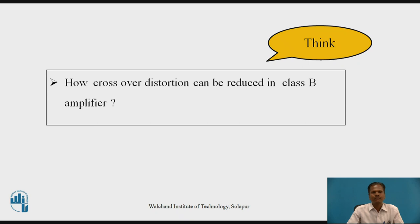At that time the transistors remain off, so output voltage and current will be zero, producing crossover distortion. This crossover distortion can be reduced by biasing the two transistors using a voltage-divider biasing circuit to provide a turn-on voltage across the base-emitter junction of the transistors, so that the output will follow the input. In this way, crossover distortion can be minimized in Class B amplifiers by biasing the two transistors slightly above the cut-off region using a voltage-divider biasing circuit.